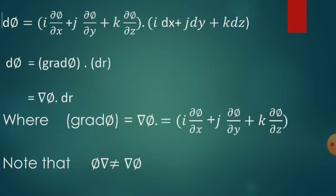This equation can be written as d phi equals i curly phi by curly x plus j curly phi by curly y plus k curly phi by curly z dot idx plus jdy plus kdz. The first bracket is gradient phi, and the second bracket idx plus jdy plus kdz is dr. Therefore d phi equals del phi dot dr, where del phi equals i curly phi by curly x plus j curly phi by curly y plus k curly phi by curly z.